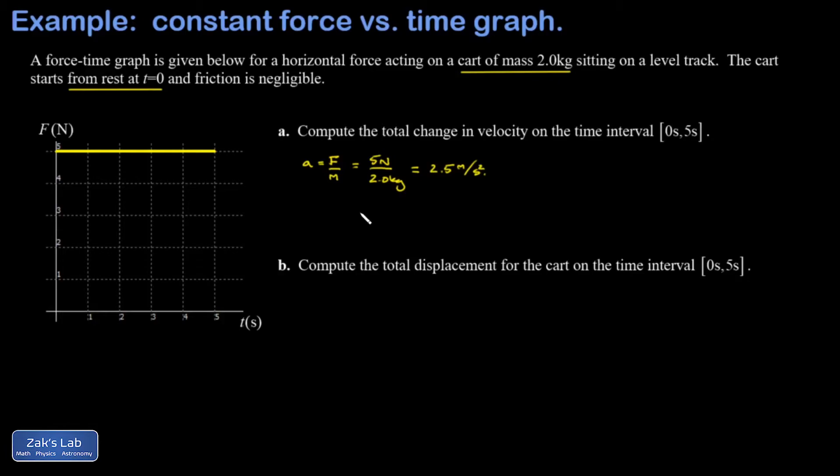Now if I allow this acceleration to continue for five seconds, I can get my change in velocity. I know that acceleration is the rate of change in velocity, so I can write it as a equals delta v over delta t.